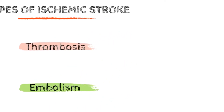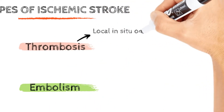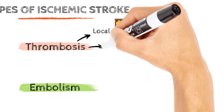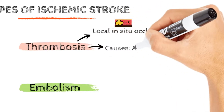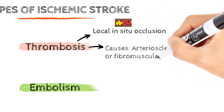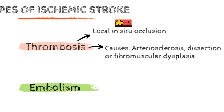Let's first discuss thrombosis. Local in situ occlusion of an artery is what is usually meant when we use the term thrombosis. Arteriosclerosis, dissection, or fibromuscular dysplasia may be the cause of the occlusion.